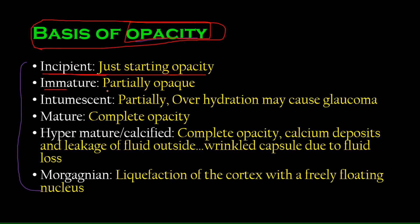So incipient, when it's just starting, then there's immature, where there is partial opacity. It's not fully opaque. There's a little bit of opacity. Little bit of halos, a little bit of glaring. And then there is a mature one. When it completely matures, when there's complete opacity. You can see very, very little.